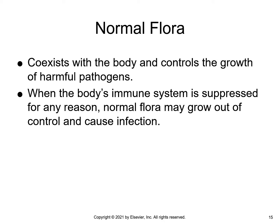Normal flora are present on the skin and in the mucous membranes, gastrointestinal tract, and vaginal area; they coexist in the body and help control the growth of harmful pathogens. Candida albicans routinely causes a yeast infection in the mouth known as thrush, which happens after treatment with antibiotics because the normal flora has been destroyed, allowing candida to grow. C. difficile is prevalent in the environment as part of the normal flora of the bowel and becomes active when a patient has had too many antibiotics, allowing C. diff to grow uncontrolled.